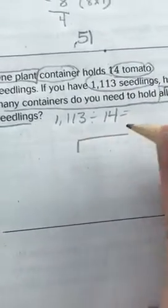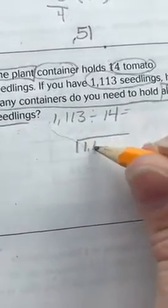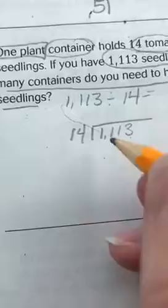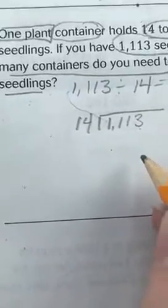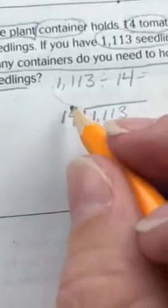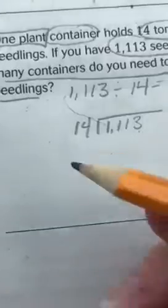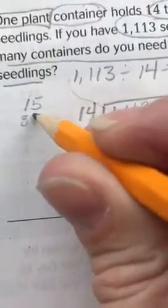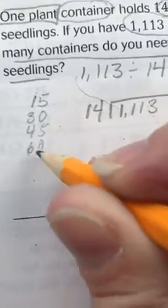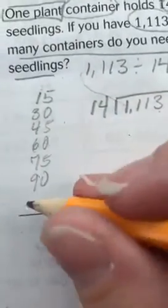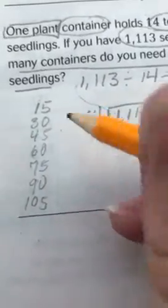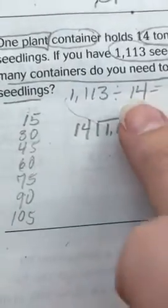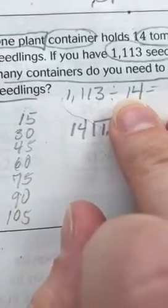I'm taking 1,113 total seedlings divided by 14 seedlings per container. To rewrite this in the number house: 1,113 gets inside the shelter and 14 is knocking on the door. Since I don't know my multiples for 14, I can find a nice friendly compatible number. You might know your multiples for 10 or 20. In this case I know my 15s because I know clock time: 15, 30, 45, 60, 75, 90, 105, 120 — adding 15 each time. This will help me estimate how many times 14 goes in.